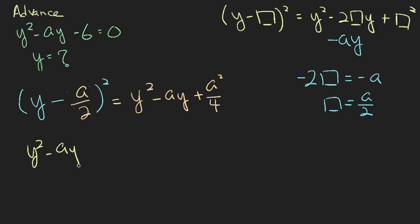If I were to write this here: y squared minus a y minus six, I can write it as y minus a over two squared. But this is not this. I will have to minus a squared over four to minus away this term.